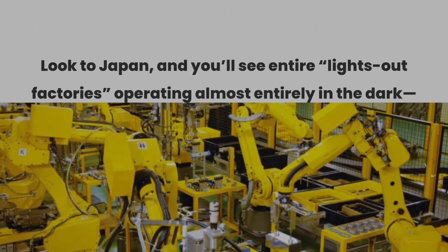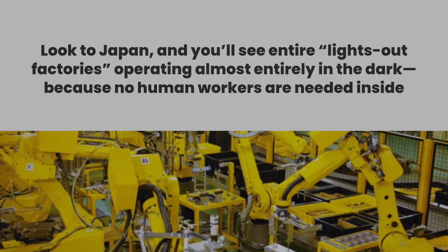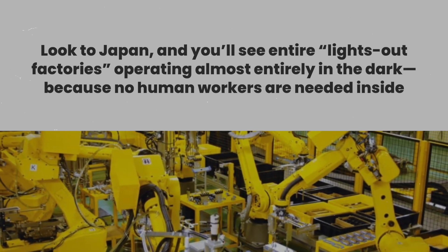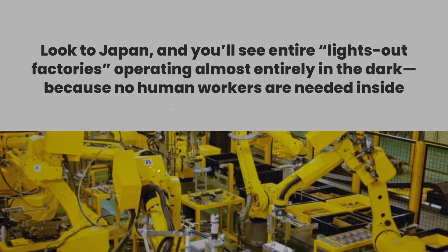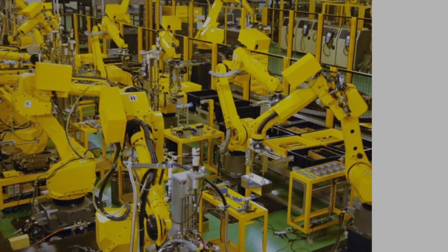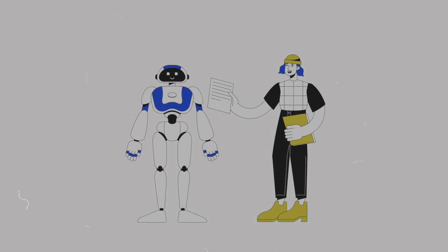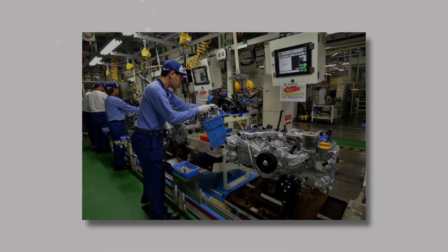Look to Japan, and you'll see entire lights-out factories operating almost entirely in the dark because no human workers are needed inside. Just a handful of supervisors monitor hundreds of automated systems, overseeing production that once required thousands of employees.